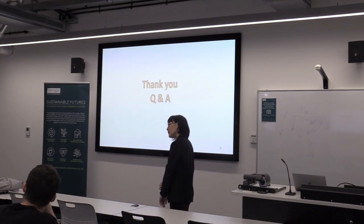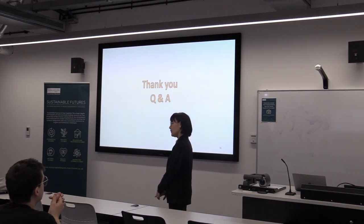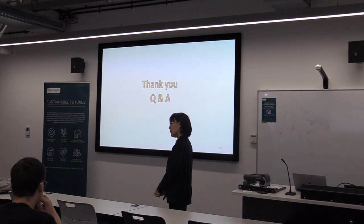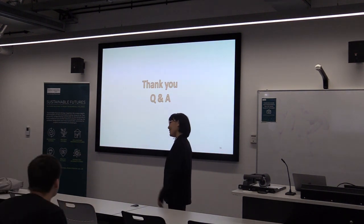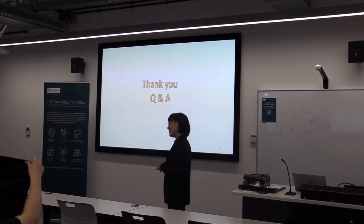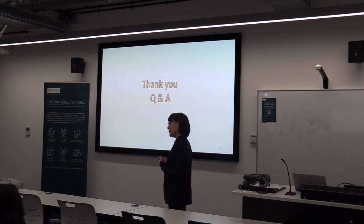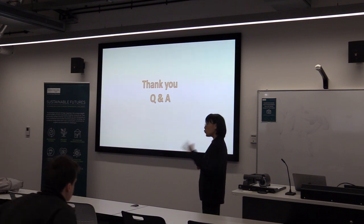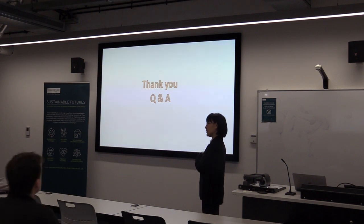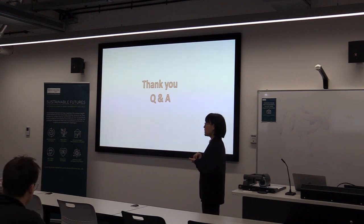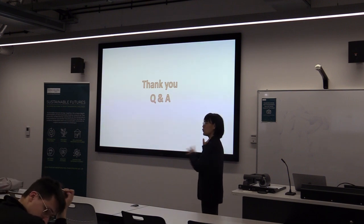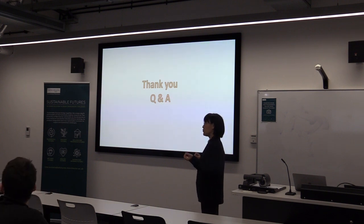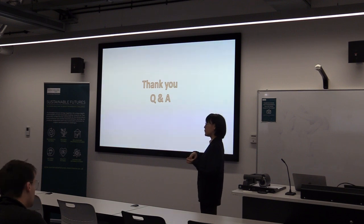A question was raised about whether it is possible to capture the movement of people who commute from places like Sheffield or Chester each day, particularly regarding the COVID period. The response was that we can do something using Google mobility data, but the issue was not having access to that type of data. However, mobile signal data can track people's movements, and this type of data has been used for other topics and is available in some other countries to track people's movements.